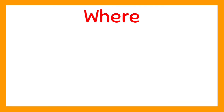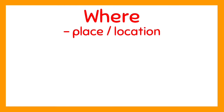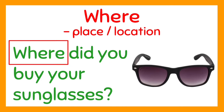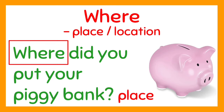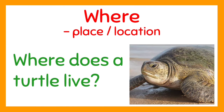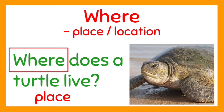Now let us have 'where.' Where is used to ask about the place or location. For example, 'Where did you buy your sunglasses?' Where is used because the person talking wants to know the place where you bought your sunglasses. Another one: 'Where did you put your piggy bank?' This question asks about the location or place where you put your piggy bank, that is why 'where' is used. Next: 'Where does a turtle live?' Where is used here because the person talking wants to know the place where a turtle lives.